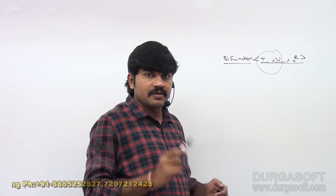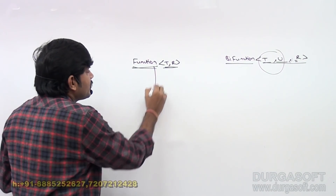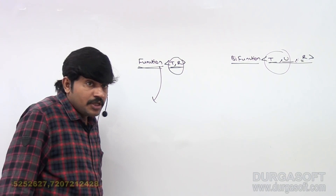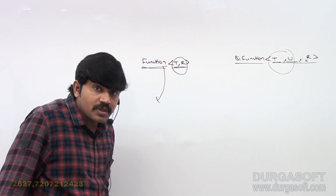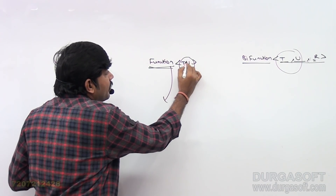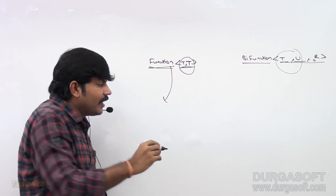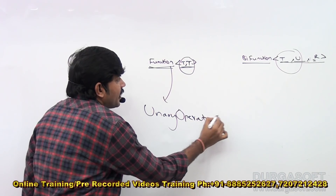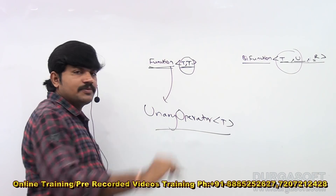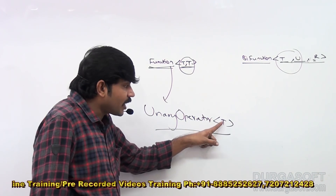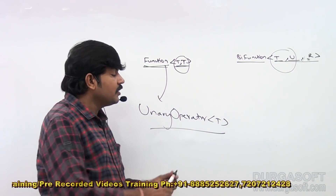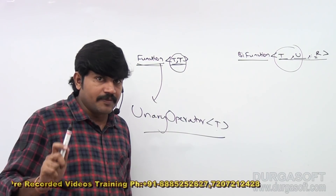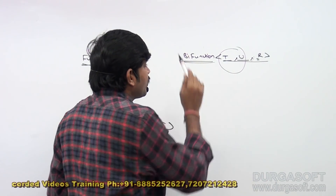If the input type and return type are both the same — suppose T comma T — then to handle such a requirement, we should go for UnaryOperator of T. Observe UnaryOperator of T: the type parameter is specified only once. It is the input type and also the return type.